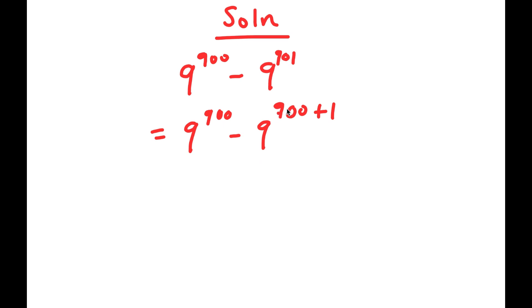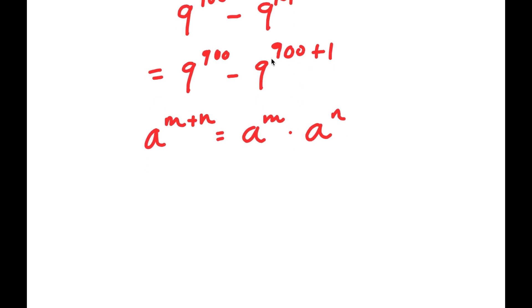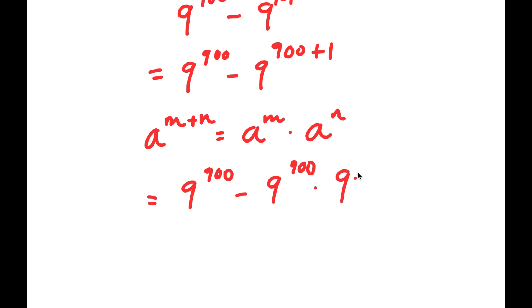Now, the reason I did this is because I can use the property a to the power of m plus n is equal to a to the power of m times a to the power of n. So nine to the power of nine hundred plus one I can rewrite as nine to the power of nine hundred times nine to the power of one.